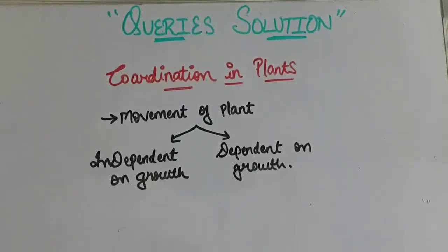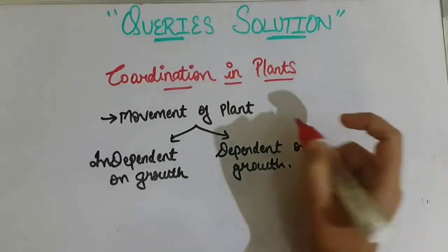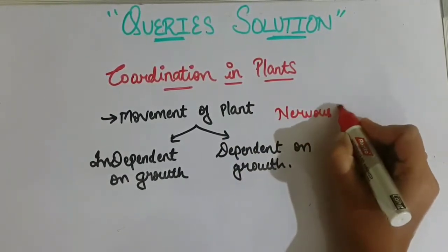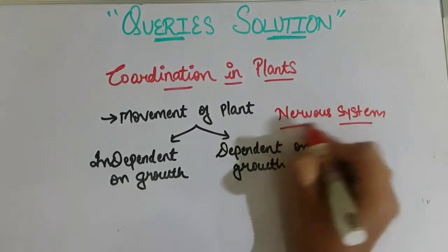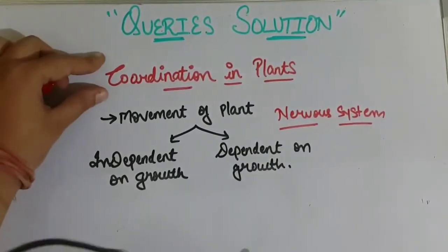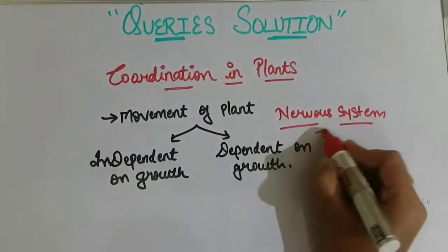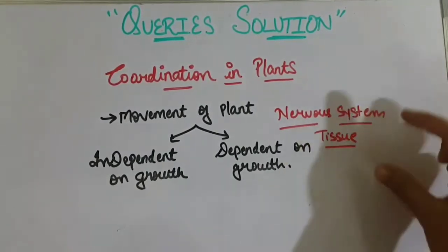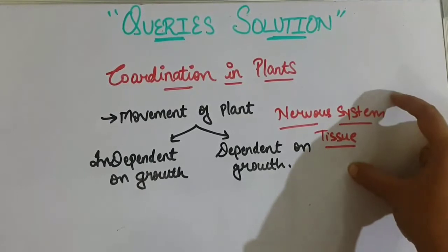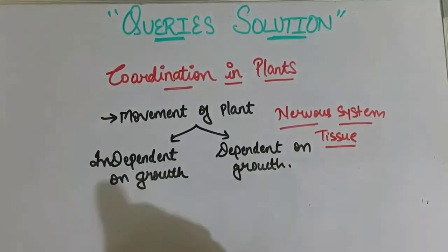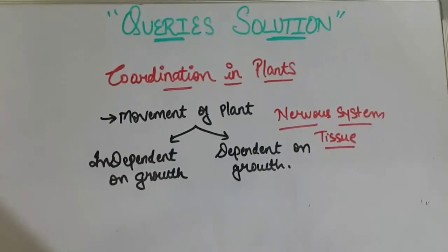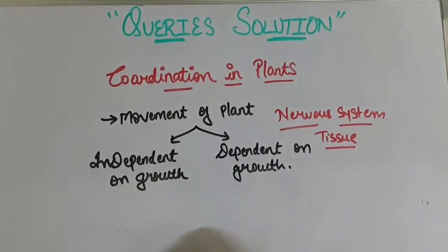Plants do not have any specific organ system like the nervous system that we studied in animals. Plants also do not have specialized tissue like neurons. So how does coordination happen in plants? Plants undergo coordination with the help of movement, and these movements can be of two types: one dependent on growth and one independent of growth.